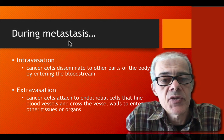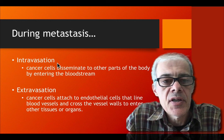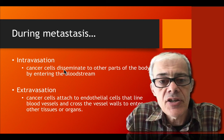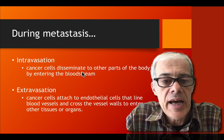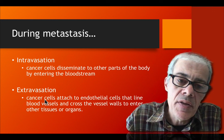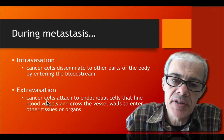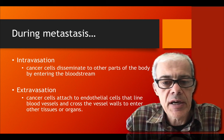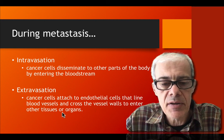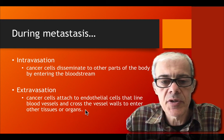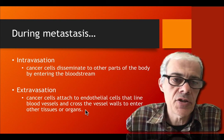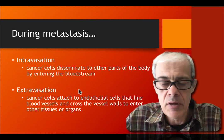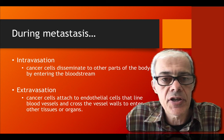During metastasis there are two processes. Intravasation is where cancer cells get into the blood system. Extravasation is where these cancer cells survive, reach a new body part, and break out of the thin blood vessel to establish themselves in a new tissue or organ. These are the two stages of metastasis that cells must go through before establishing a new location.